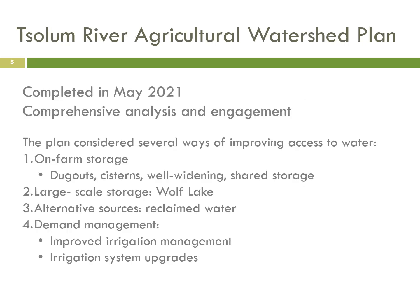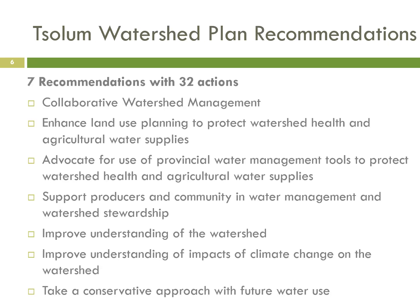The Solem River Agricultural Watershed Plan is particularly relevant to the agricultural community because so many farms have their water supply directly from this watershed. The plan was completed in May 2021 and included a comprehensive analysis and engagement process. It considered several ways of improving access to water: on-farm storage such as cisterns, dugouts, shared storage, and well widening; large-scale storage such as Wolf Lake; alternative sources such as reclaimed water; and demand-side management such as improved irrigation management, efficiency, and irrigation system upgrades. The plan includes seven recommendations with 32 specific actions nested within them.